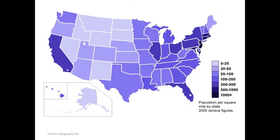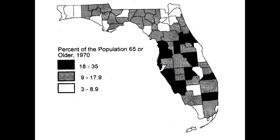The weakness of a choropleth map is that there's a lot of generalization. For example, in this choropleth map showing the percent of the population 65 or older in Florida in the year 1970, we see that multiple counties appear to be identical. If you remember from a couple lessons ago, we call this induction.